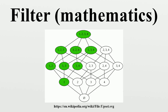A filter base is a subset B of P with the following properties: B is non-empty and the intersection of any two sets of B contains a set of B; the empty set is not in B. Given a filter base B, the filter generated or spanned by B is defined as the minimum filter containing B — it is the family of all subsets of S which contain some set of B. Every filter is also a filter base, so the process of passing from a filter base to a filter may be viewed as a sort of completion. If B and C are two filter bases on S, one says C is finer than B if for each b ∈ B, there is a c ∈ C such that c ⊆ b.